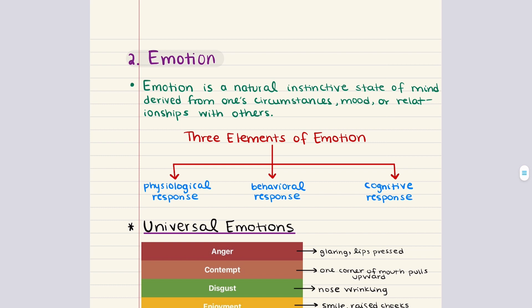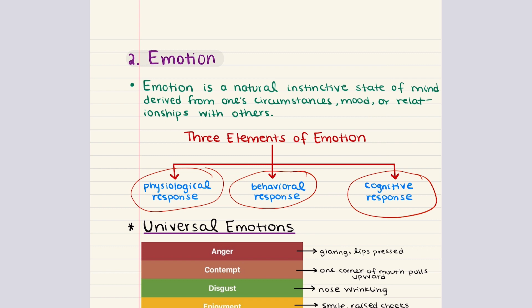Moving into objective two on emotion: emotion is a natural instinctive state of mind derived from one's circumstances, mood, or relationships with others. We'll start by discussing the three elements of an emotion: the physiological response, the behavioral response, and the cognitive response. When a feeling is first experienced, arousal is stimulated by the autonomic nervous system. The physiological component includes changes in heart rate, breathing rate, skin temperature, and blood pressure. While these changes can be hard to recognize in everyday life, they have been detected in laboratory settings.